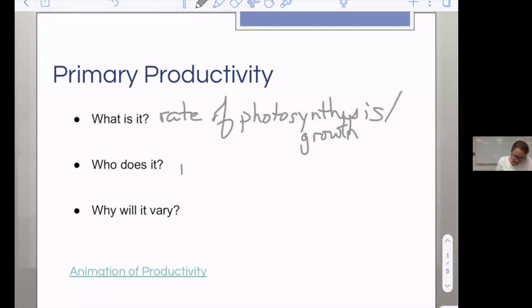Primary productivity is only done by plants. Secondary productivity is for consumers. We also include algae in there and anything else that is an autotroph.